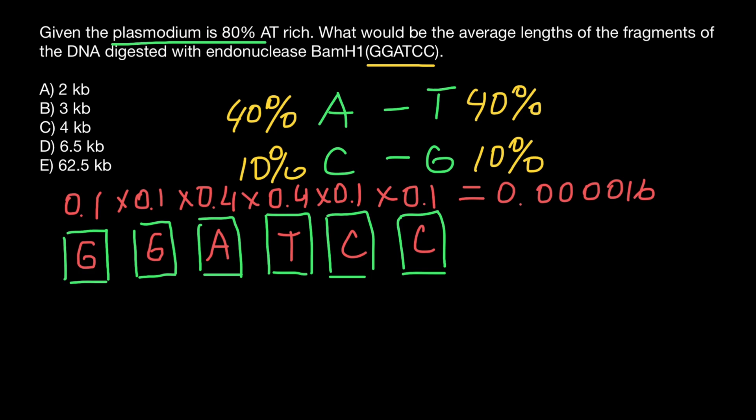By the way, some of you might think we have to multiply this number by two because we have double-stranded DNA. This sequence may happen on one strand and also on the other strand. But actually, take a look.